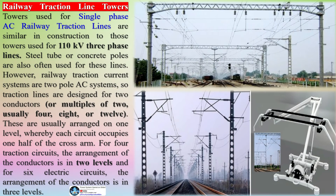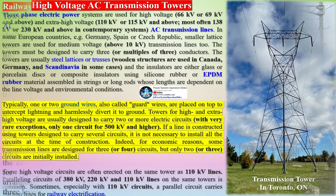Towers used for single-phase AC railway traction lines are similar in construction to those used for 110 kV three-phase lines. Steel tube or concrete poles are also often used for these lines. However, railway traction current systems are two-pole AC systems, so traction lines are designed for two conductors or multiples of two — usually four, eight, or twelve.